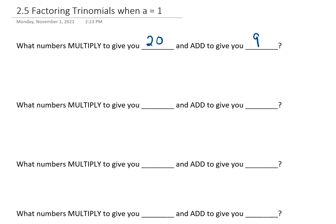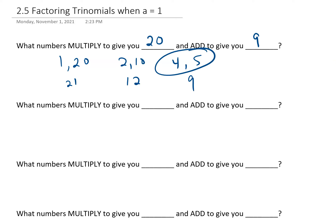Before we start, I want to practice a skill. What numbers multiply to give you 20 and add to give you 9? This is kind of a game of guess and check. You want to think of all of the factor pairs for 20. 1 times 20 gives you 20, but that adds to give you 21. 2 times 10 gives you 20, but adds to give you 12. 4 times 5 multiplies to give you 20 and adds to give you 9, so the factor pair you're looking for is 4 and 5.